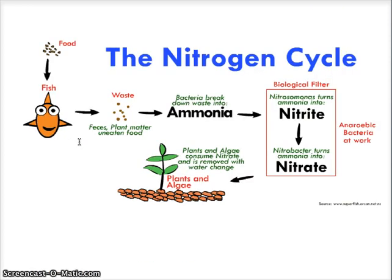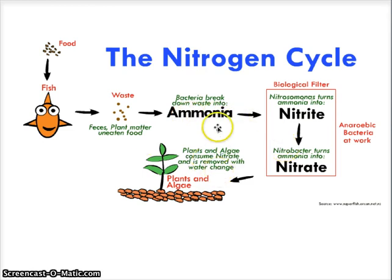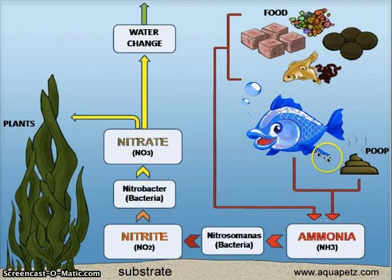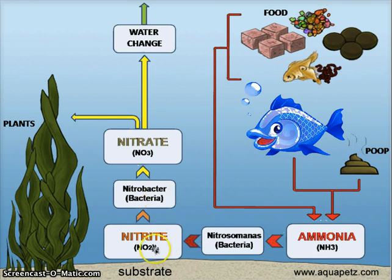Here's a nitrogen cycle diagram. This summarizes what happens in a tank with the nitrogen cycle and how the waste products get broken down and the nitrogen gets recycled. Basically, when fish eat food, they produce waste, and that waste turns into ammonia, which is toxic to the fish. Bacteria break down the ammonia into something called nitrite, and then another type of bacteria breaks down that nitrite into nitrate, which gets absorbed by plants, and then the cycle continues.